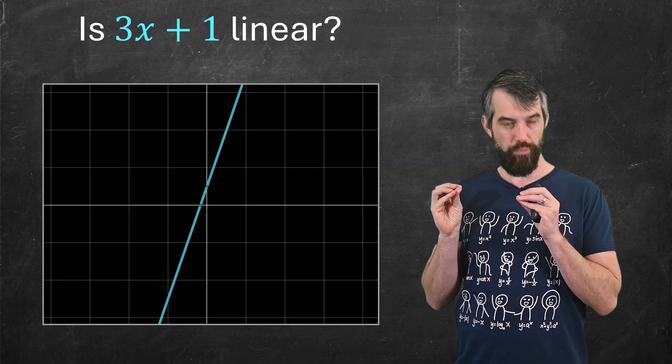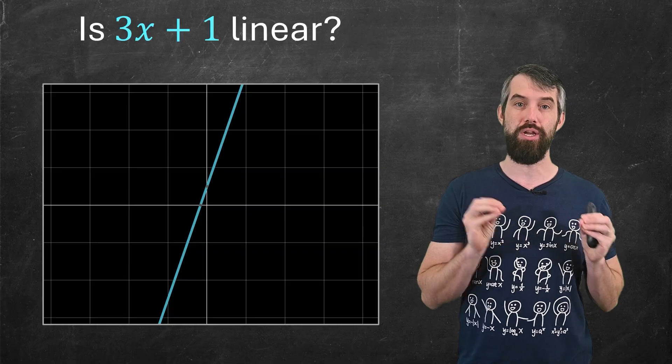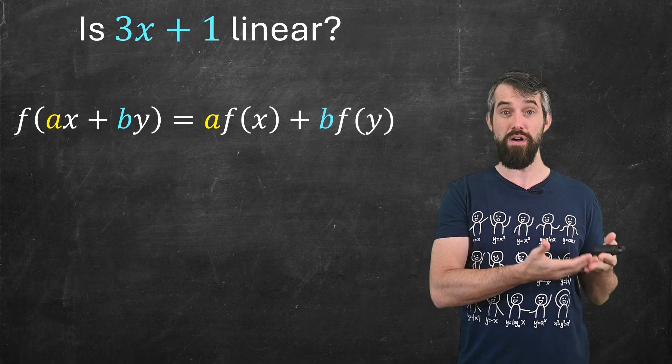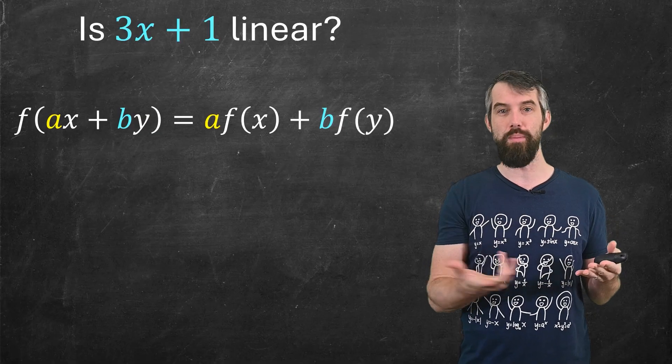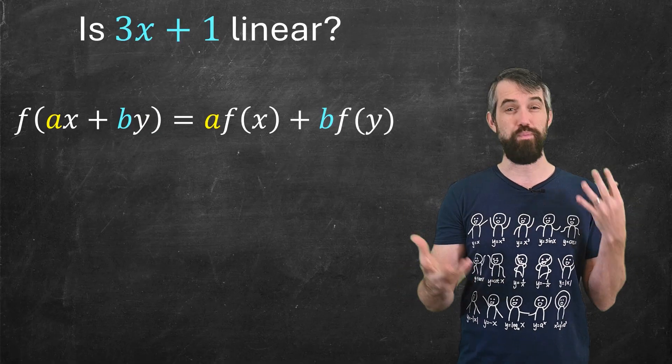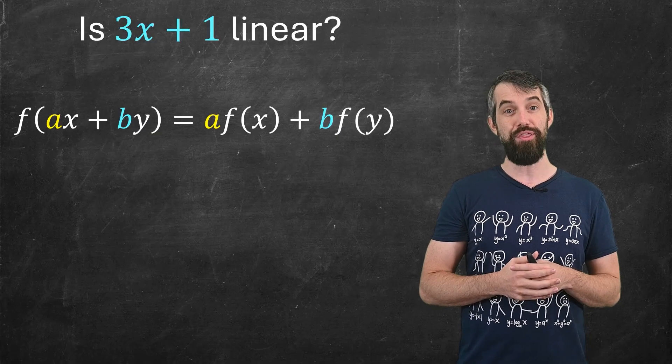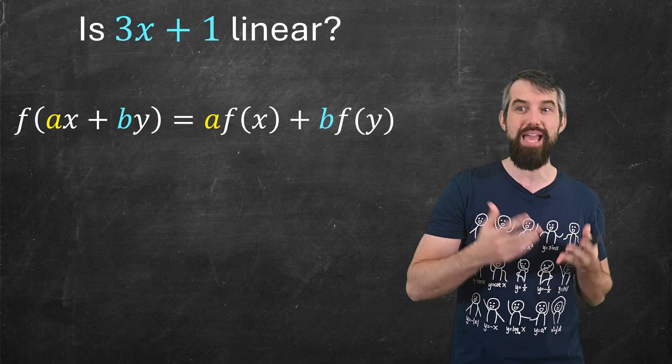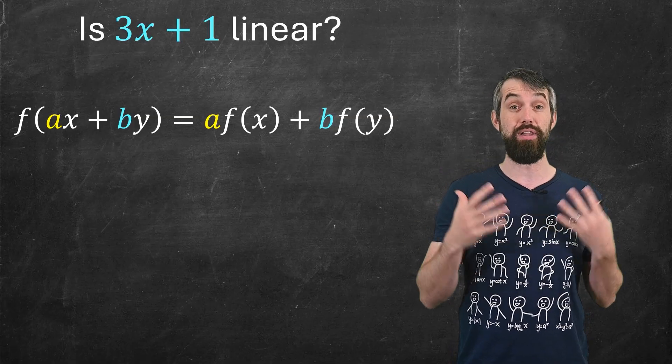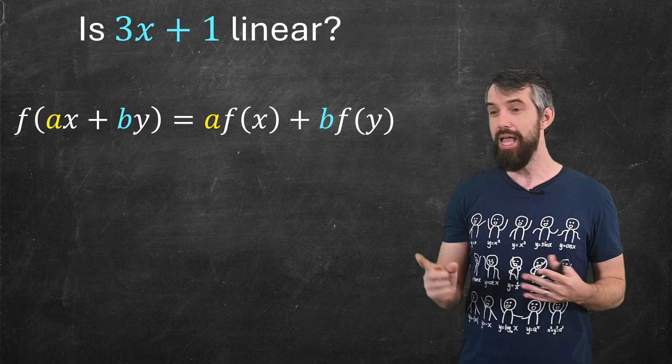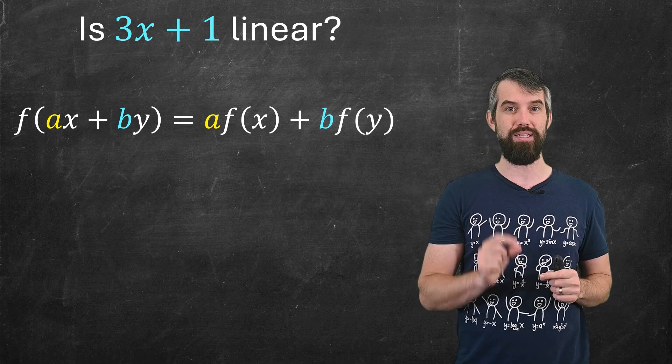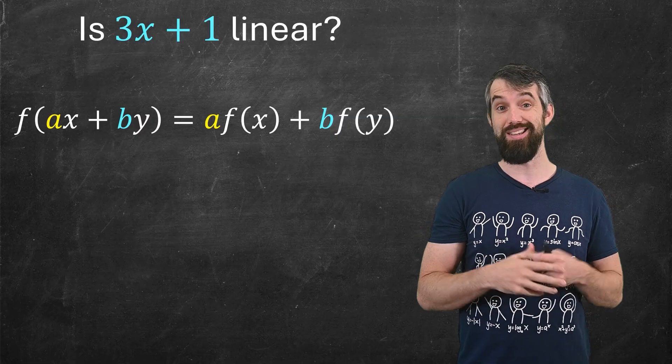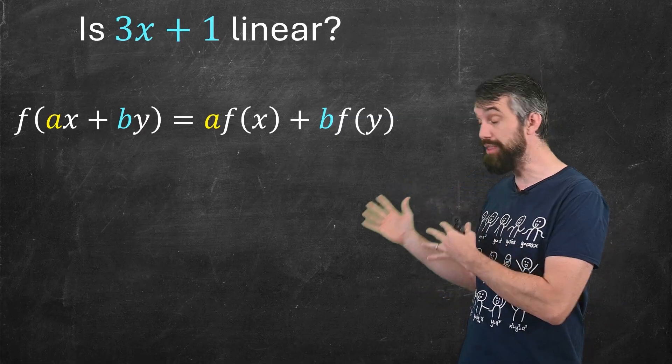But there's a really important algebraic notion of linearity. And it goes like this. If I have a function and I take a linear combination, so f(ax + by), a linear combination, then the output is the linear combination of the outputs. It's af(x) + bf(y). So this is a lovely algebraic property. And note that this demands that f(0) is 0. So 3x plus 1 is not linear according to this definition. It doesn't go through the origin.